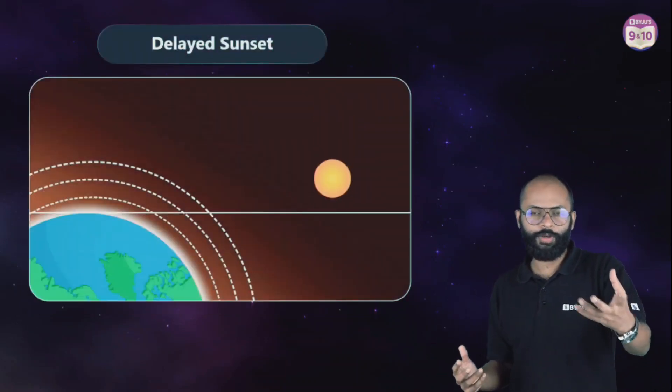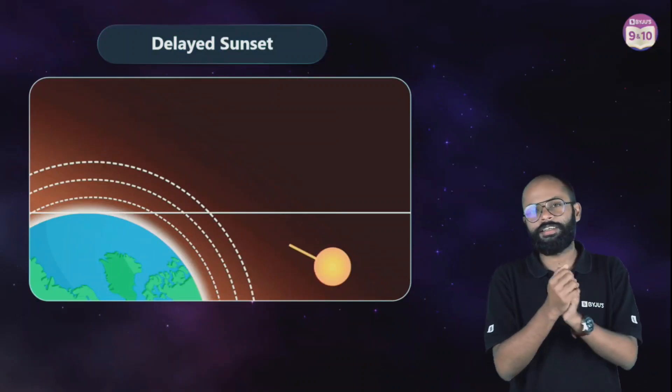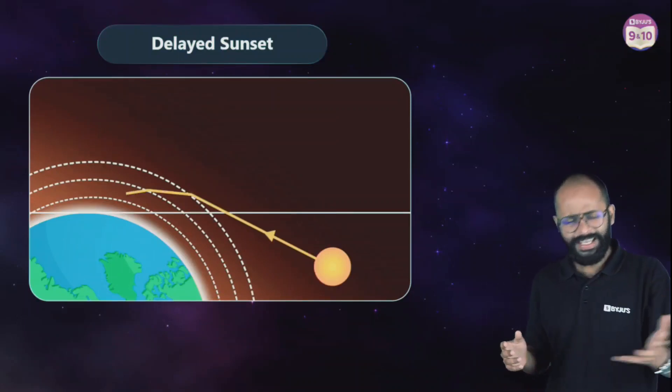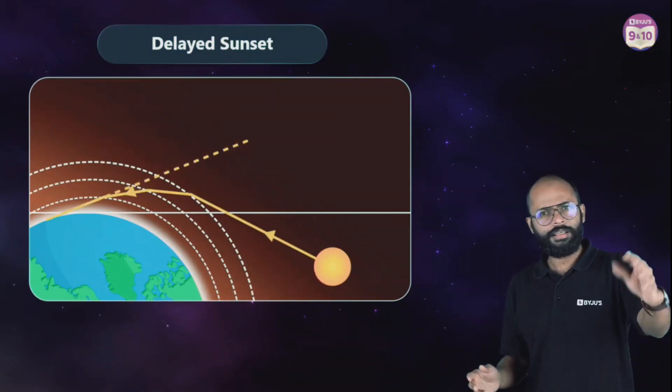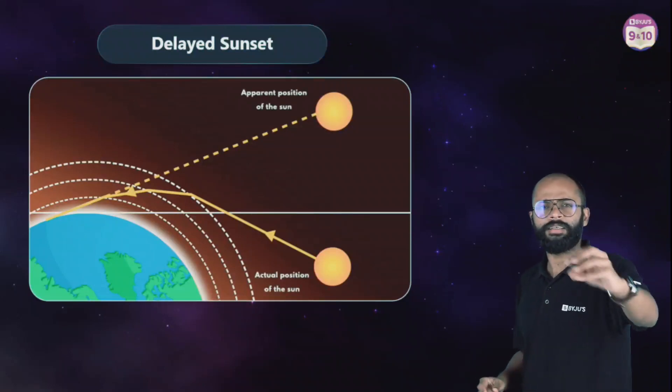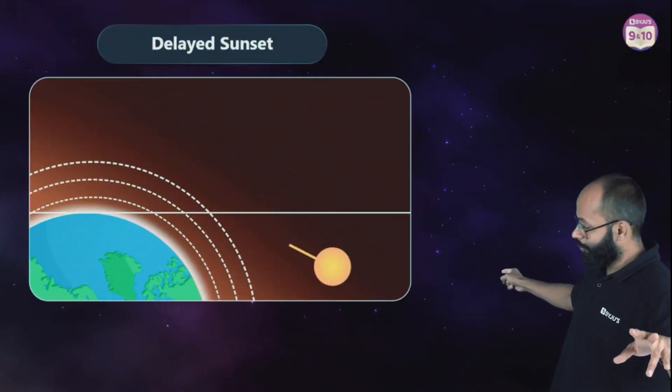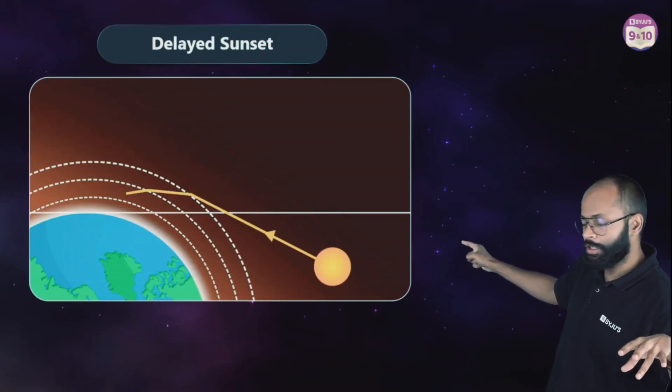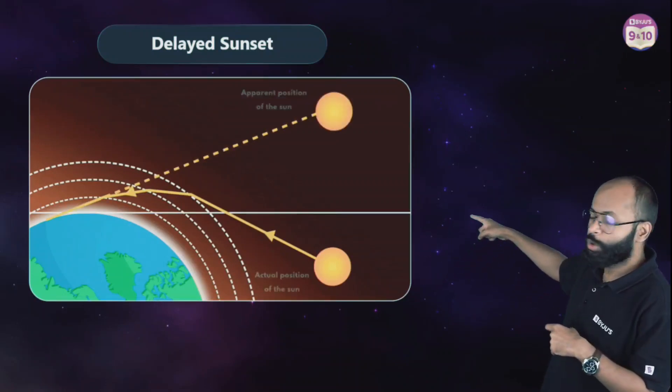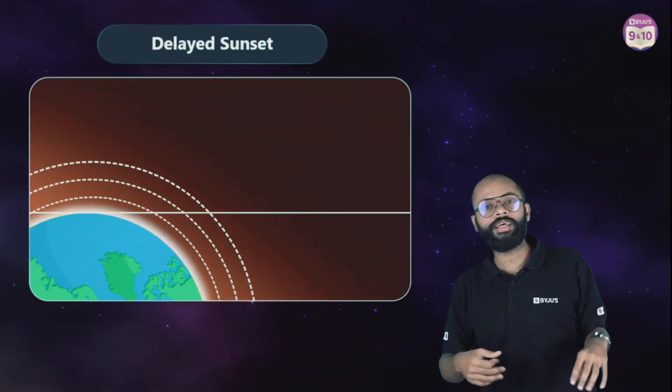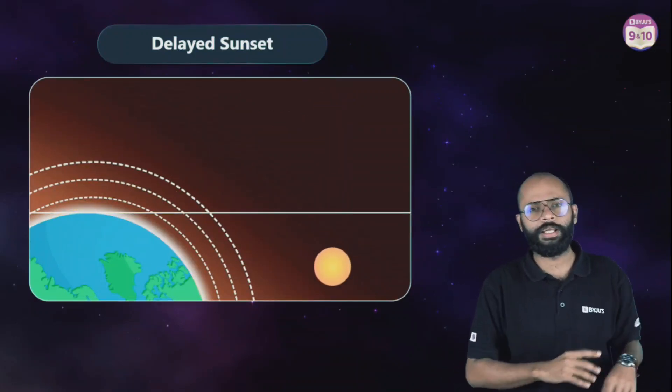Same thing happens when the sun is setting. The sun has actually set, the real sun has actually set. But what you are seeing, because the light from that sun is traveling towards earth and it is getting bent towards normal, you are seeing the sun above the horizon. People think the sun hasn't set yet, but it has actually set two minutes late.